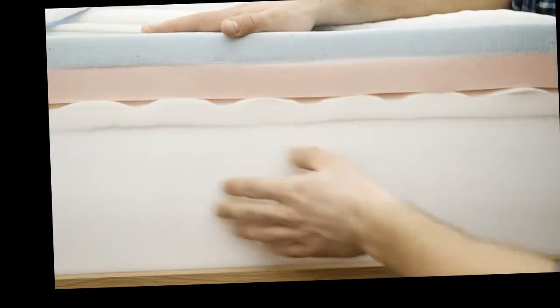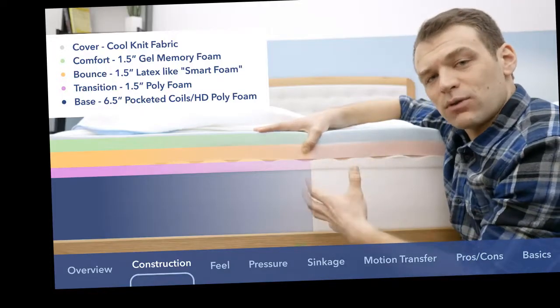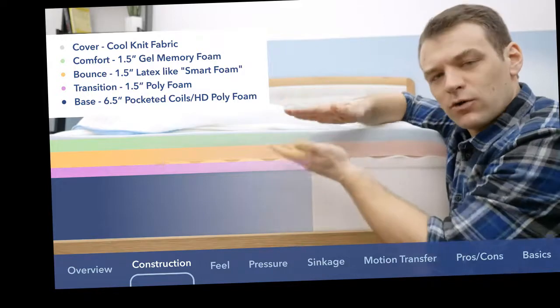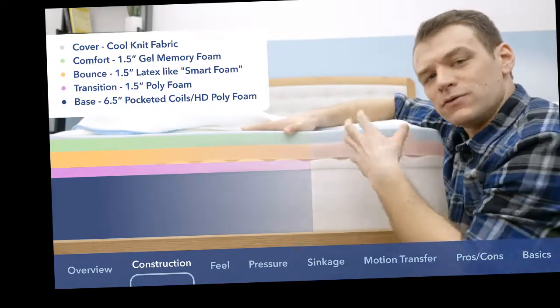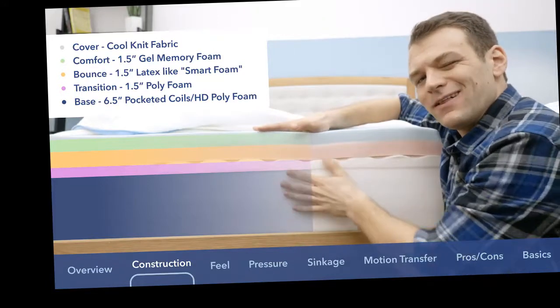Wrapped around all of the support systems is high-density polyfoam edge support. It's really nice if you sleep with a partner, because it allows you to sleep all the way to the end of the bed without collapsing the bed. If you do sleep with a partner and need to use the entire area of the bed, it makes it feel a little bit bigger.